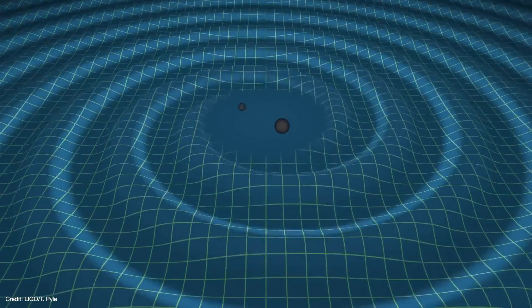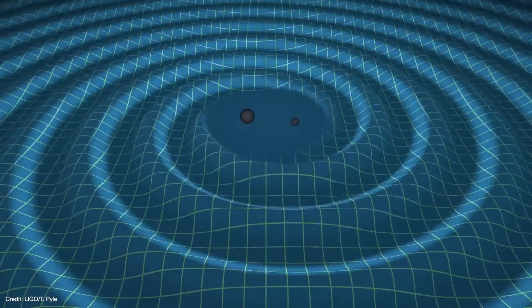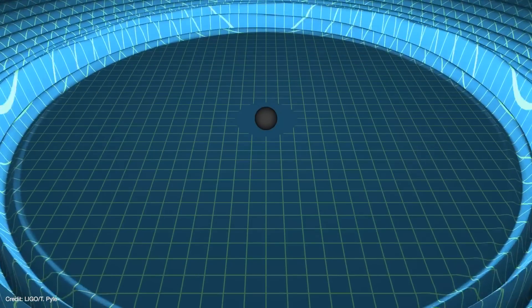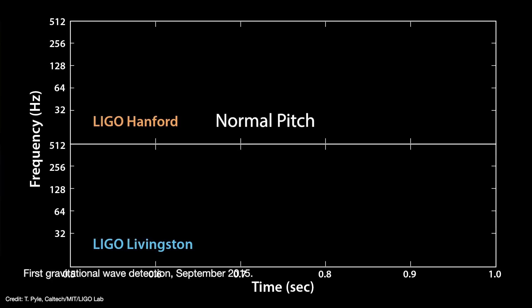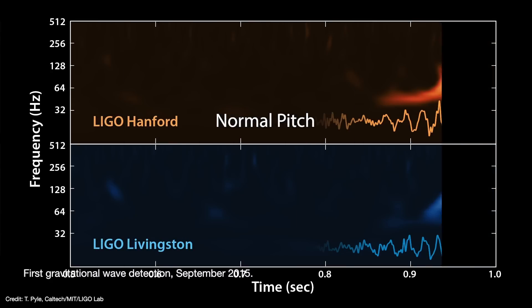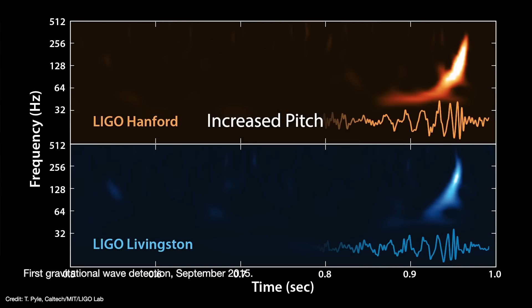We first detected gravitational waves way back in 2015 when two relatively small black holes merged. As they spiraled inwards, they generated gravitational waves of increasing frequency until they peaked at around 250 hertz. But the waves detected in this new study have frequencies that are so low, they're measured in nanohertz. That's billionths of a hertz.